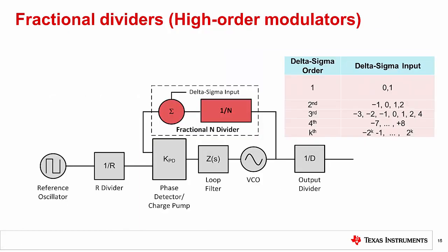Fractional spurs can be reduced by modulating the N divider between more than just two values. This is what is done in the case of higher order delta sigma modulators. For the previous example, the fraction was 900.2, and the first order modulator would modulate between values of 900 and 901. A second order modulator could use values of 899, 900, 901, and 902. A third order modulator could use values ranging from 897 to 904. The modulator does not always have to use all numbers available in its range.